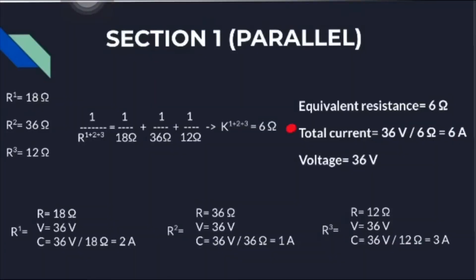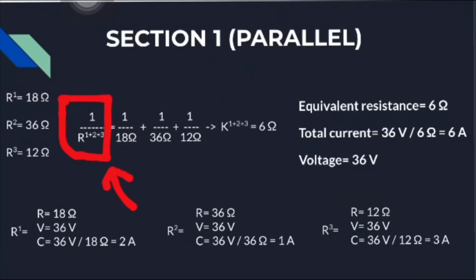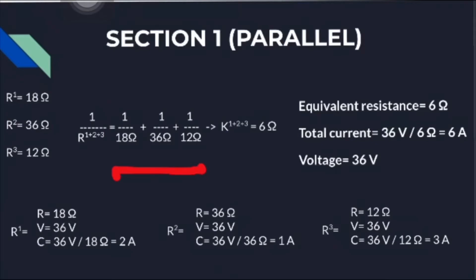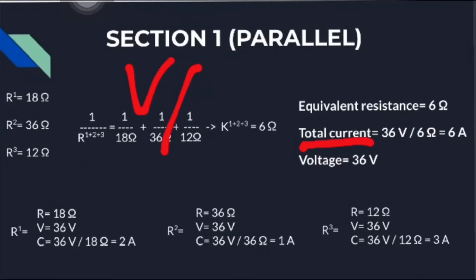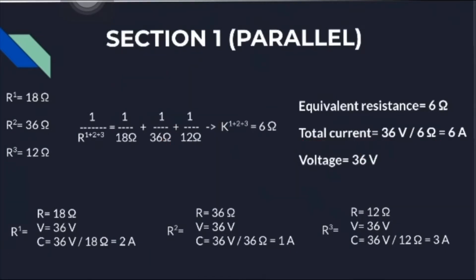Then we calculate the equivalent resistance for the parallel section. We follow the formula of adding 1 divided by each resistance. Using our three resistances we get an equivalent resistance of 6 ohms. To calculate the total current we divide the voltage of 36 volts by the equivalent resistance of 6 ohms, giving us a total of 6 amperes.